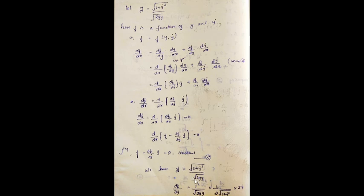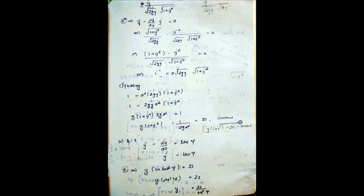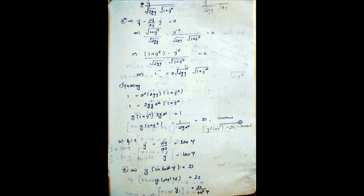Now F equals root(1 + y_dot squared) divided by root(2gy). Finding ∂F/∂y_dot: it equals 1 divided by root(2gy) times 1/(2 root(1 + y_dot squared)) times 2 y_dot, which simplifies to y_dot divided by root(2gy) times root(1 + y_dot squared). Substituting into F minus (∂F/∂y_dot) times y_dot equals a, taking LCM gives (1 + y_dot squared minus y_dot squared) divided by root(gy) times root(1 + y_dot squared) equals a.